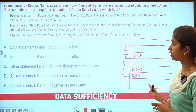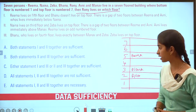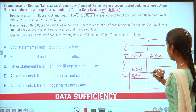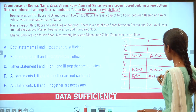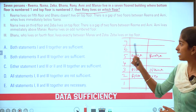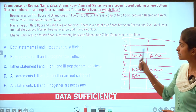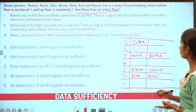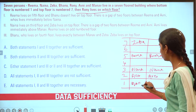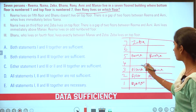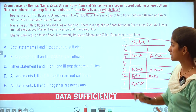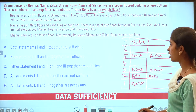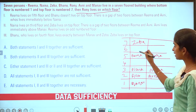Statement 1 gives the first answer. Rony is on a floor. For statement 1 the options involve Rima, Naina, and Avni. For the second statement: Rima and Avni — Avni lives immediately above Rima. Rima lives on an odd-numbered floor. Rony lives in one of two possible places — we don't know which.